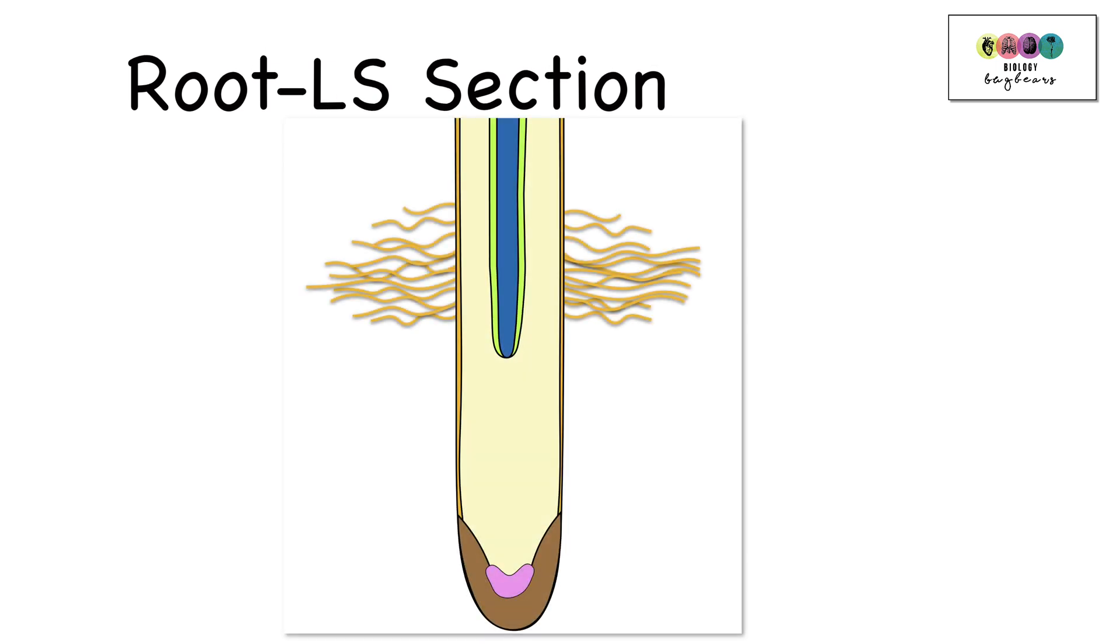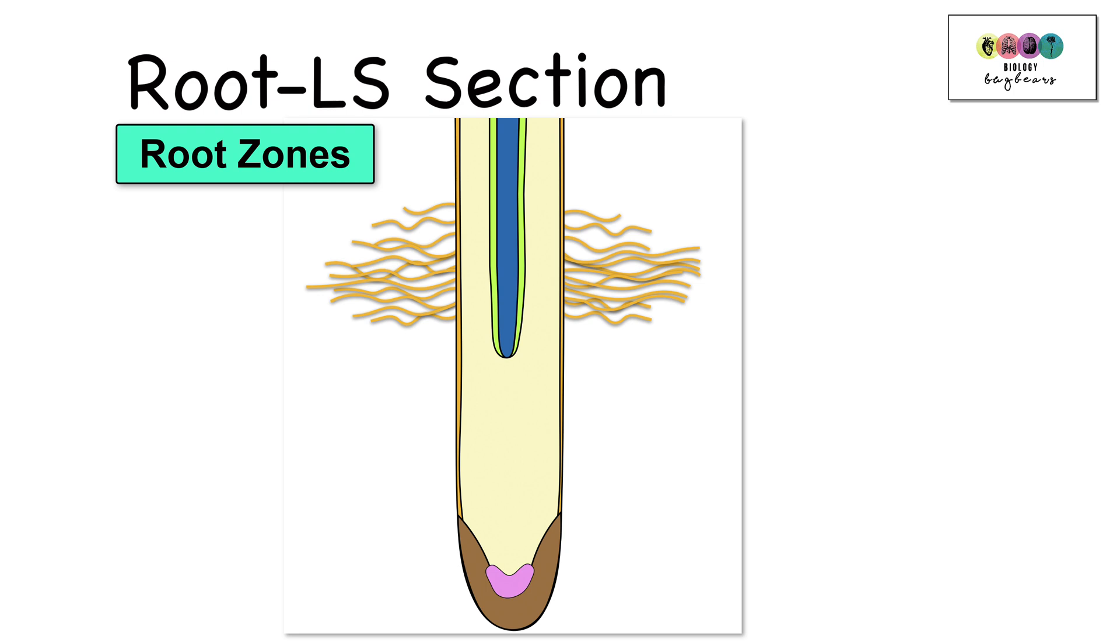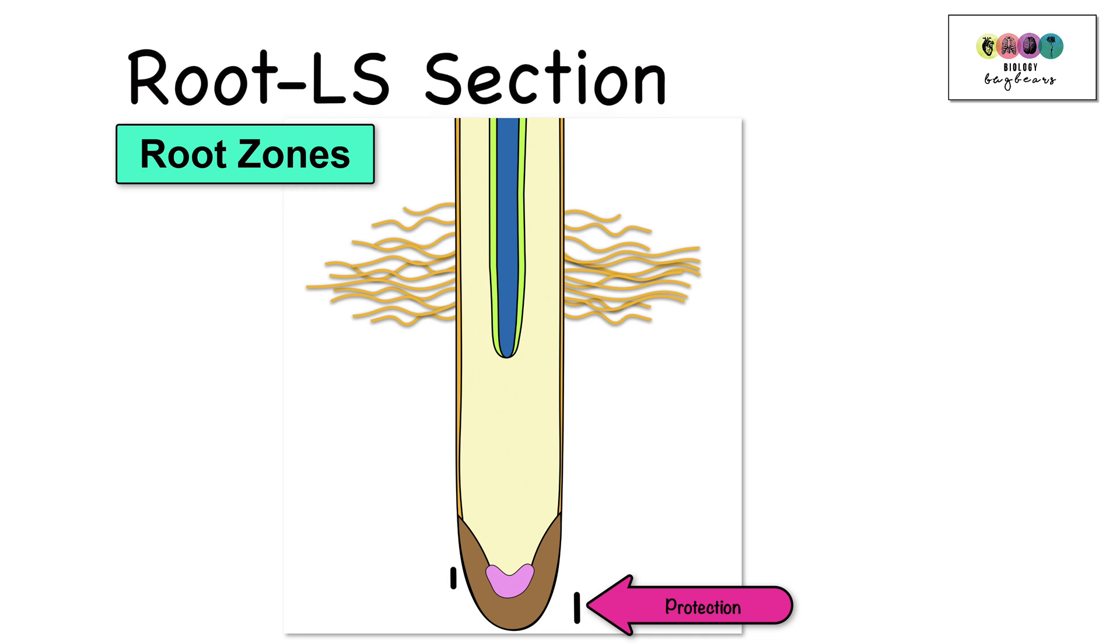The next diagram is the diagram of the root, the LS section, the longitudinal section, and in this diagram there are lots of labels that you should know, the first of which is fill in the zones. If you study biology at third level, often they leave out or they don't include the zone of protection, but for our exam we will. The zone of protection found at the root cap, and it does what it says. It protects the root as it grows downwards.